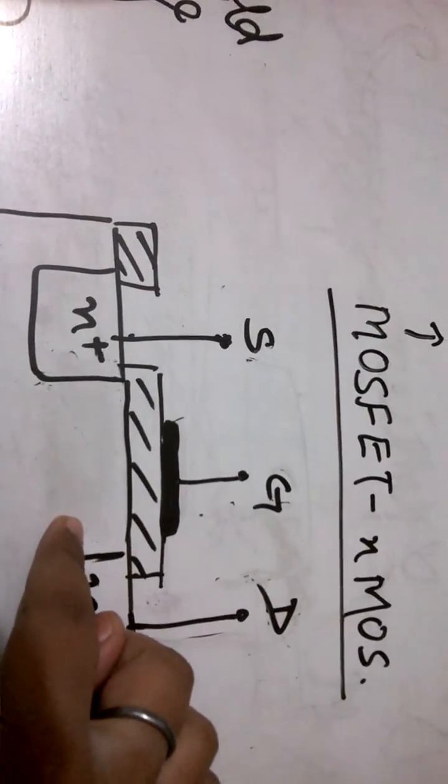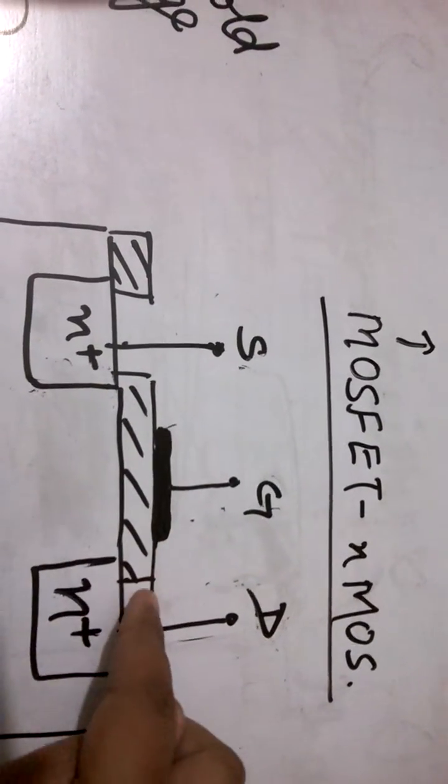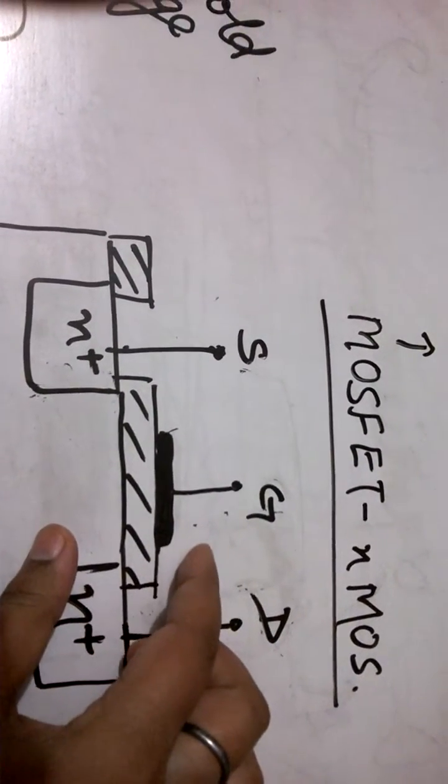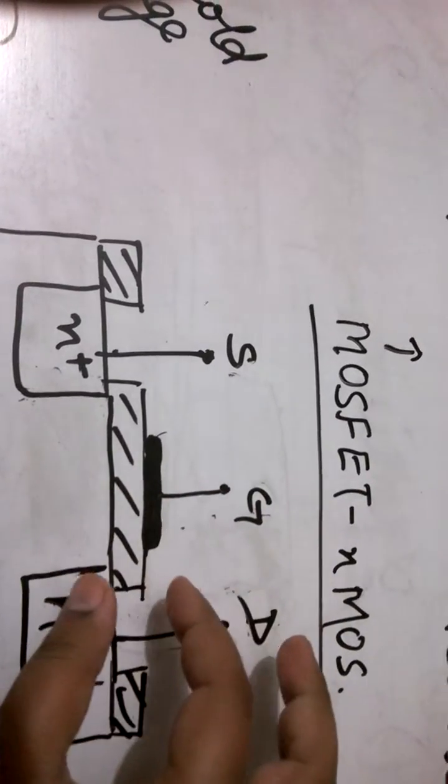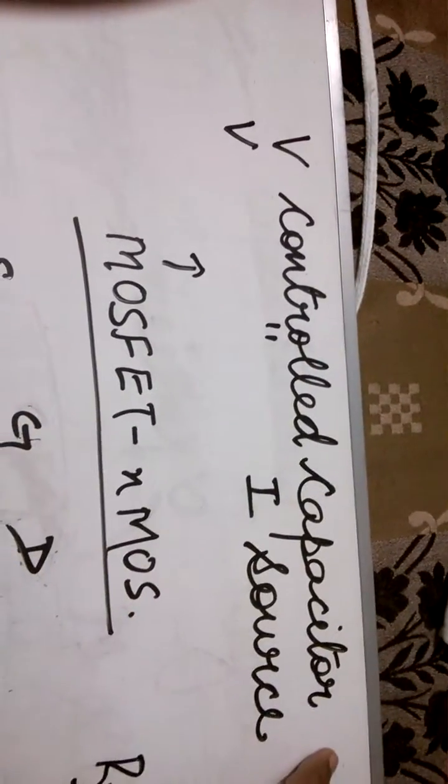Silicon dioxide layer acts as a dielectric between the two plates. So this structure acts as a capacitor so we can call it as a voltage controlled capacitor.